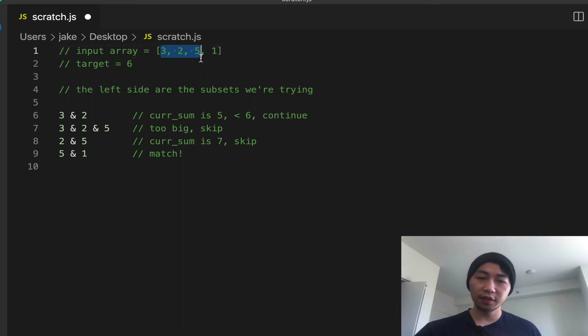3, 2, and 5. That's too big, so we skip that one. And notice what we can do is we can probably drop this off and move on to 2 and 5, which equals 7. So that's not going to work because it's still too big, so we skip that one. And so we drop the 2. And if we look at 5 and 1, it equals 6, and then we have a match.